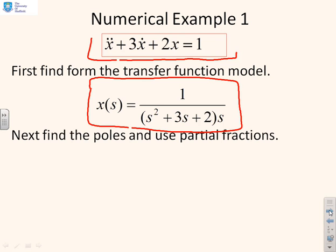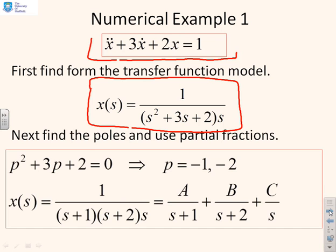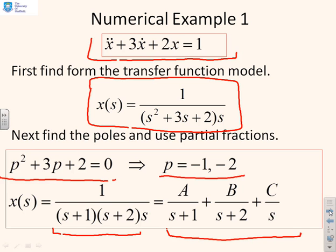Next, I need to find the poles and put this into partial fraction form. Solving for the poles, if I solve p² + 3p + 2 equals 0, I get poles at minus 1 and minus 2. Therefore, the polynomial is clearly factorized as (s + 1) times (s + 2). So I've got x of s equals 1 over (s + 1)(s + 2)s. When I put this into partial fractions, I get A/(s + 1) + B/(s + 2) + C/s. What remains is to find these unknown residues, capital A, B and C.